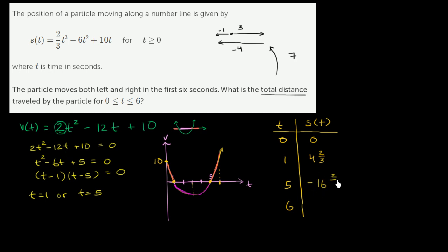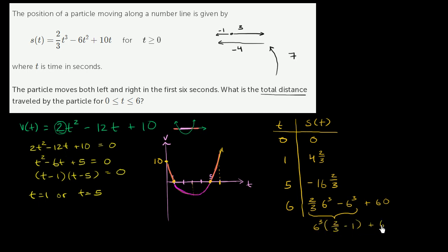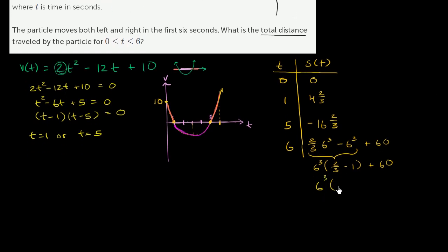At t = 6: s(6) = (2/3)(6³) - 6(6²) + 10(6). Factoring: 6³(2/3 - 1) + 60 = 6²(6)(-1/3) + 60 = 36(-2) + 60 = -72 + 60 = -12. So the position at t = 6 is -12.